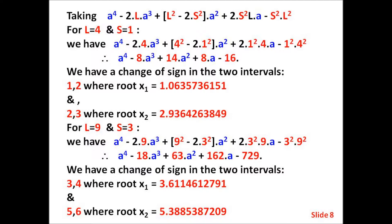For l equals 9 and s equals 3, we have the fourth-degree polynomial: a⁴ minus 18a³ plus 63a² plus 162a minus 729. We have a change of sign in the two intervals (3, 4), where root x₁ equals 3.638888888... — wow, I've beaten number-filing mythology to the punch on this one.